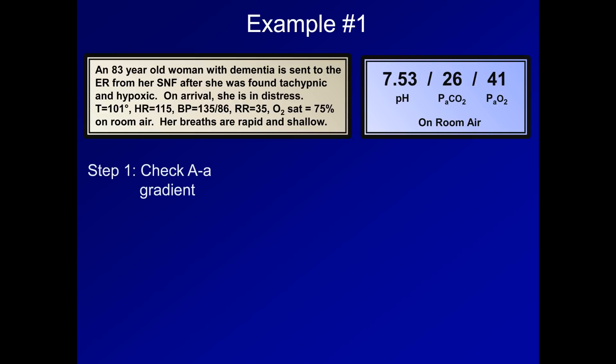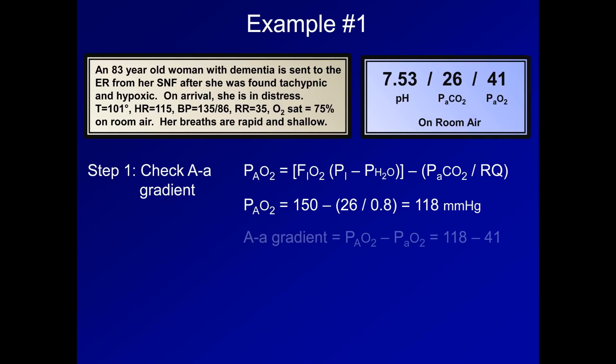Step 1 will be to check the AA gradient. So here is the alveolar gas equation to calculate PAO2. Remember this simplifies to 150 minus the PaCO2, which is 26 in this case, divided by 0.8. This equals 118 millimeters of mercury. Thus the AA gradient is 118 minus 41, which is 77 millimeters of mercury.